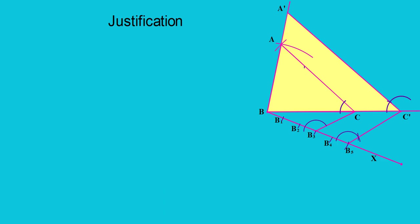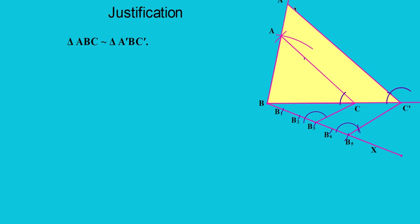Now let us see the justification of this construction. Triangle ABC and triangle A'BC' are similar because angle B is equal to angle B (common), angle C is equal to angle C' (corresponding angles), and angle A is equal to angle A' (corresponding angles). Therefore, by AAA similarity, the two triangles are similar. Since the triangles are similar, their corresponding sides are proportional, so we can write AB/A'B = AC/A'C' = BC/BC'.